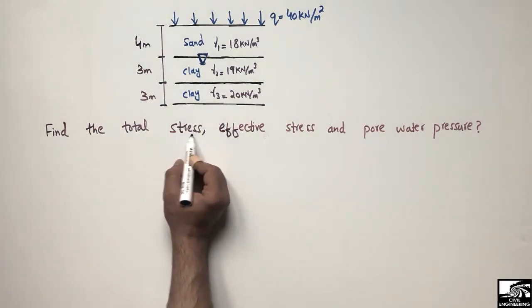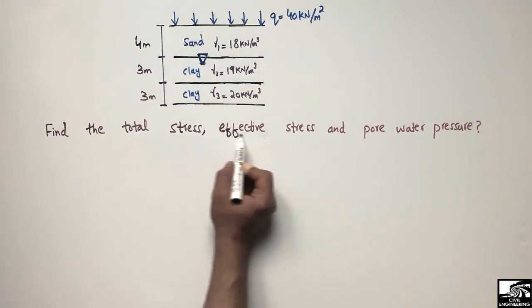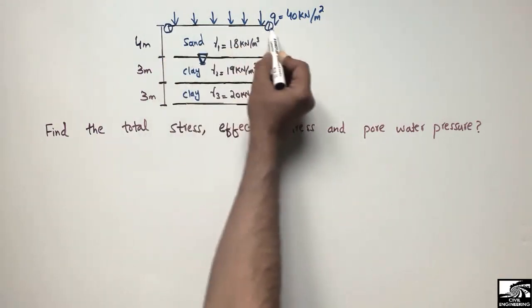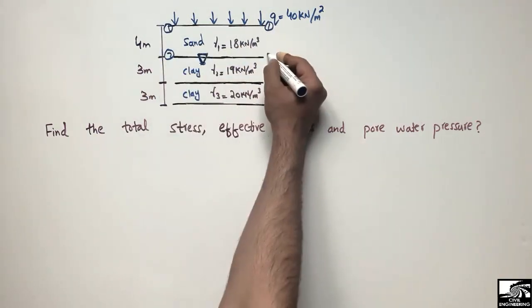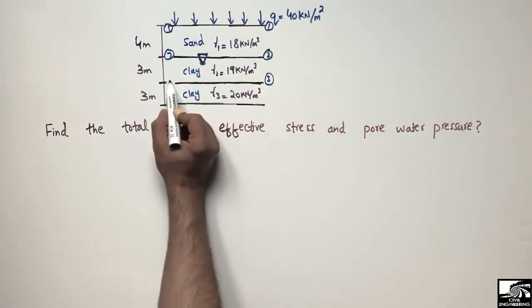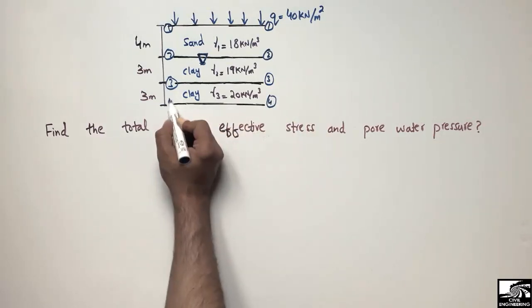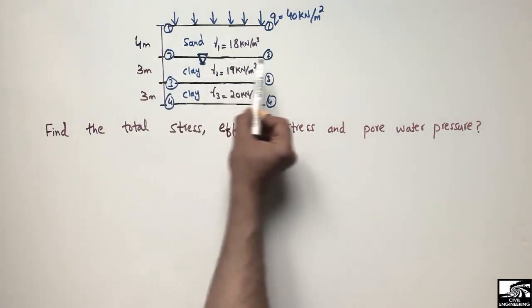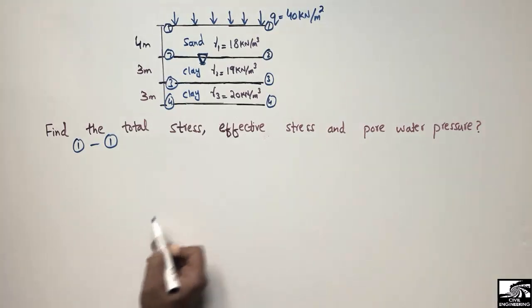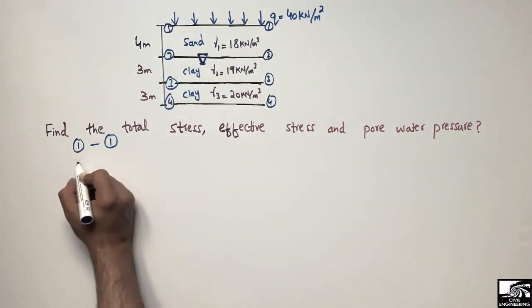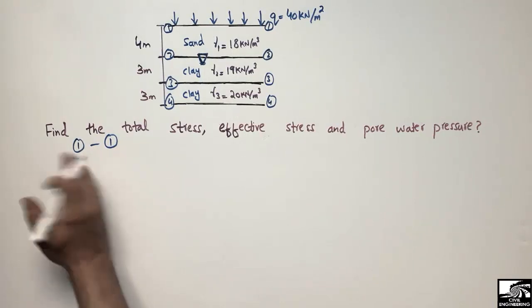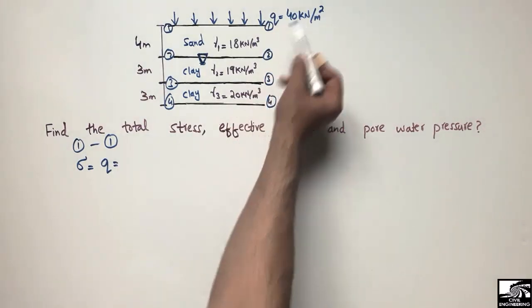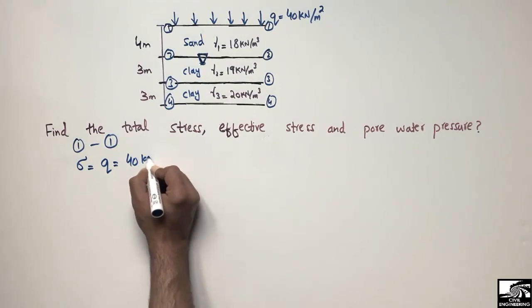To start with the total stress, we have to find all stresses at different points: at point 1-1, point 2-2, point 3-3, and point 4-4. So at point 1-1, which is the top of the soil, the total stress is equal to the total pressure acting on the soil, which is q, and it is equal to 40 kN/m².